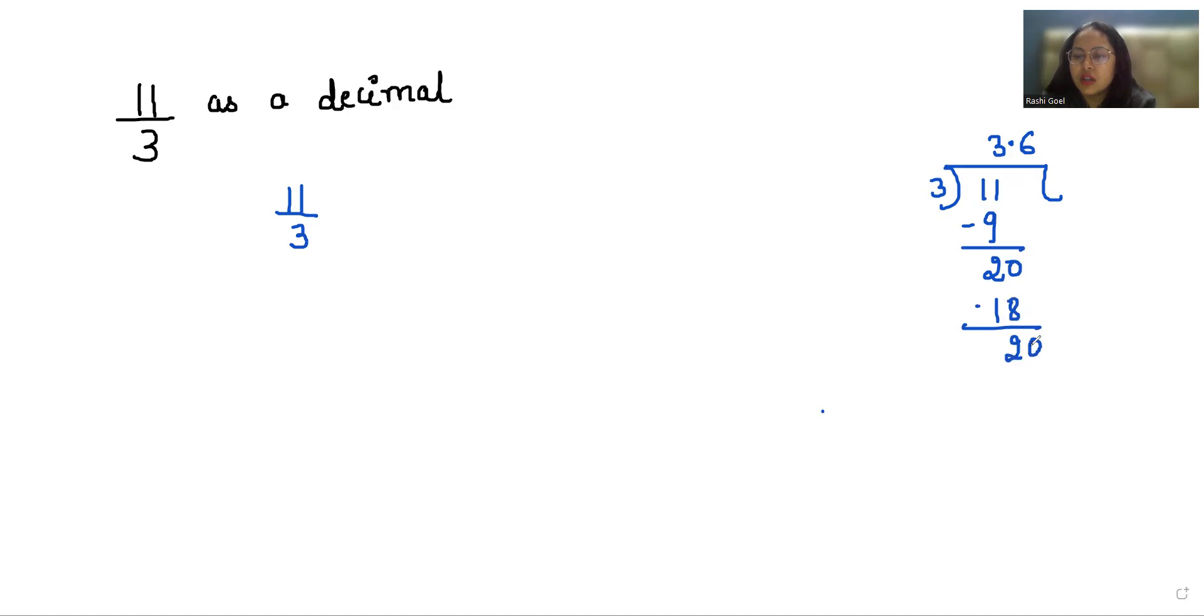This gave us 2 again, 6 to 18 and 2. This will go on, so we can say that 11 by 3 is 3.66 or 3.67.